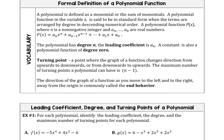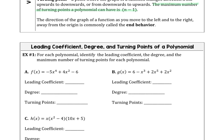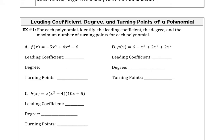A turning point is a point where the graph of a function changes direction from upwards to downwards, or from downwards to upwards. The maximum number of turning points a polynomial can have is the highest degree minus one. For example, a quadratic function — a parabola — has highest degree two, so it has one turning point, either at a maximum or a minimum. We can expand that thinking for polynomials of any power.